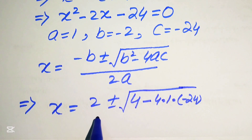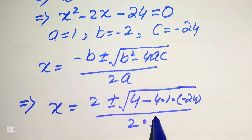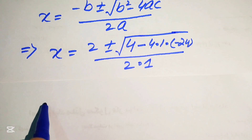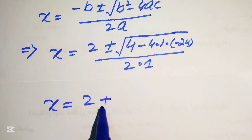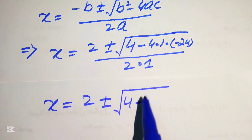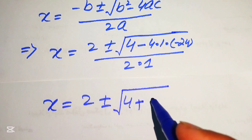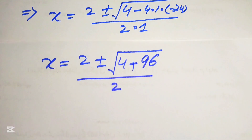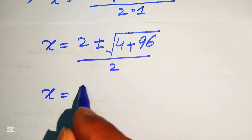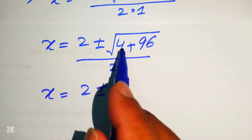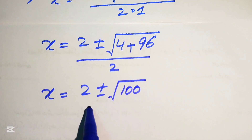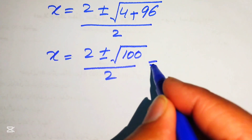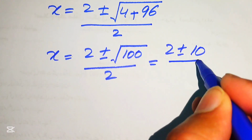Substituting into the formula with 2a equals 2, we get x equals 2 plus or minus square root of (4 plus 96) divided by 2. Since 4 plus 96 equals 100, and the square root of 100 equals 10, this gives x equals (2 plus or minus 10) divided by 2.